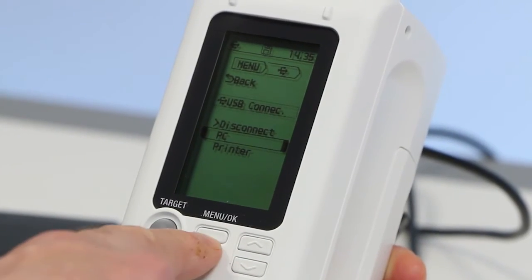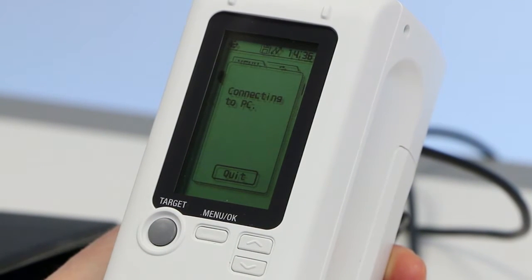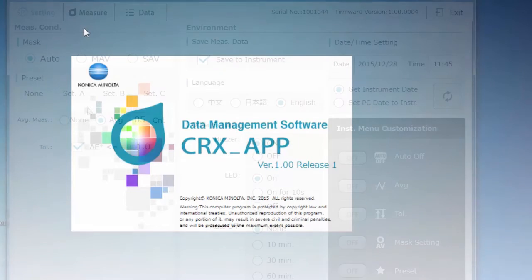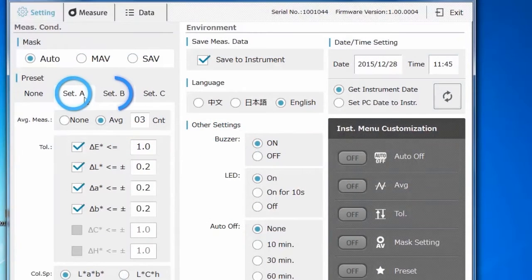To set up custom pass and fail judgments, first connect the instrument to a PC. Then, enter three separate tolerance settings in the included utility software. These settings will highlight your out-of-tolerance sample readings.